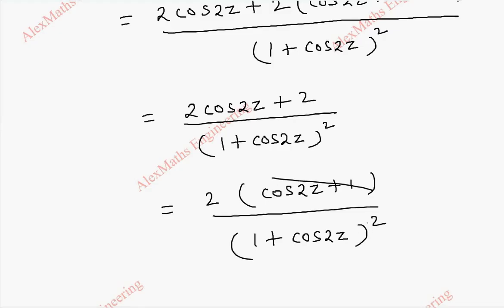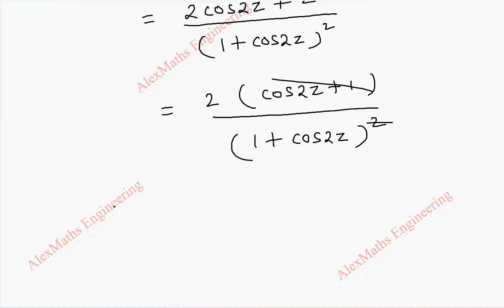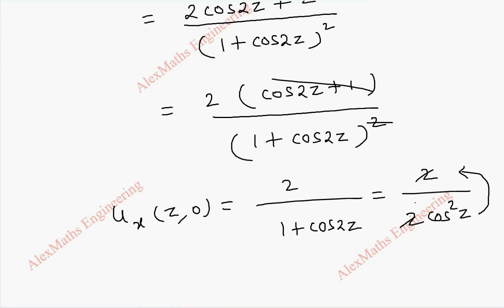After cancelling this, finally u_x becomes 2 by 1 plus cos 2z. Further this can be replaced with a trigonometric formula. 1 plus cos 2z is 2 cos square z. After cancelling this, we can carry this to the numerator. So u_x of z comma 0 becomes secant square z, that is 1 by cos square z is secant square z.